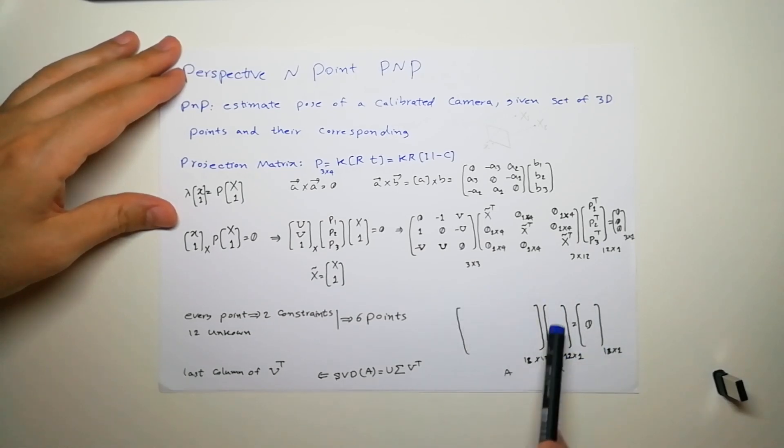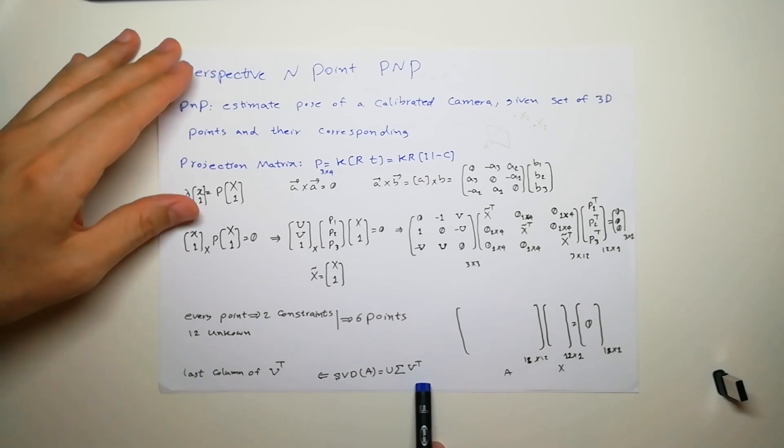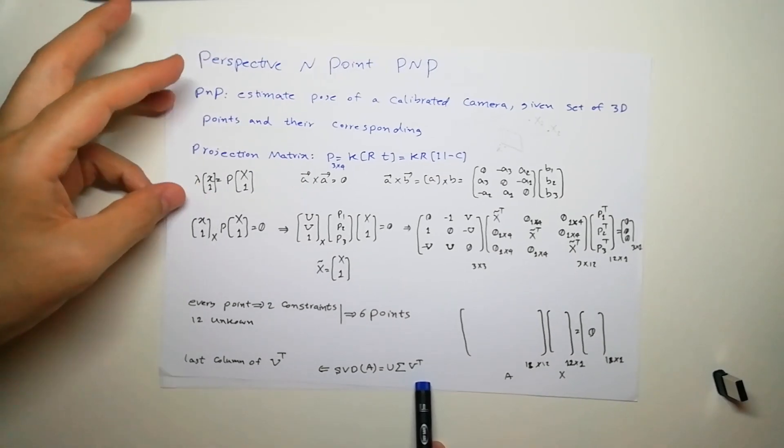We know how to solve it. It's pretty easy. We just get the SVD of this matrix, and then the last column of the V transpose from the SVD is the answer for our problem, which is this.